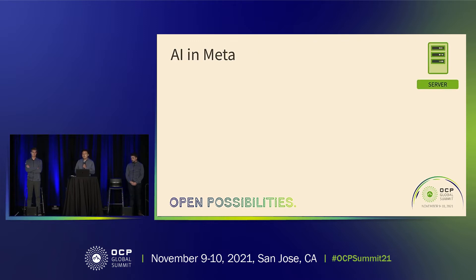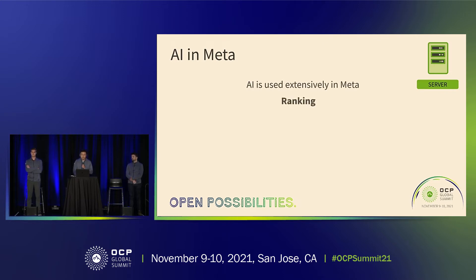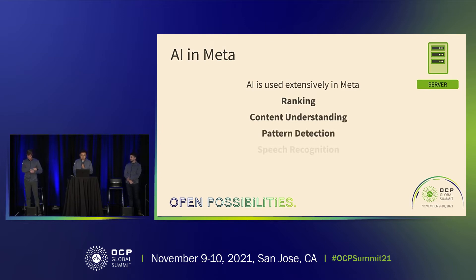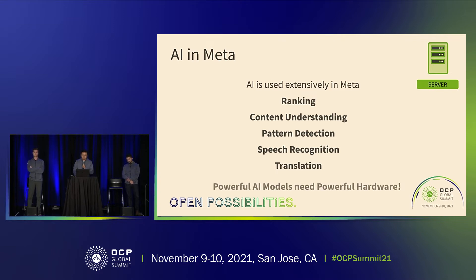Talking a bit about Zion — before that, I want to introduce high-level AI at Meta. AI is used extensively in Meta's fleet: we have ranking, content understanding, pattern detection, speech recognition, and translation. All those powerful AI models, as discussed in the previous panel, need powerful hardware. That's the problem statement.